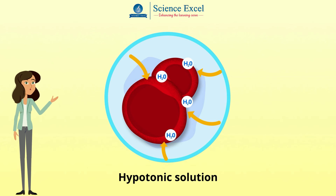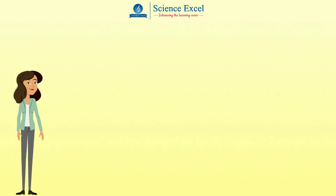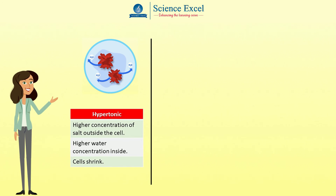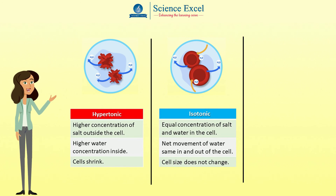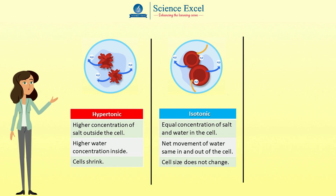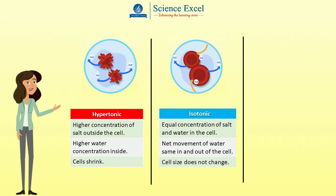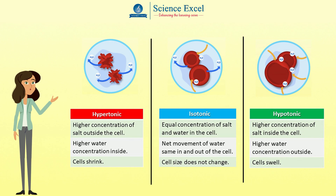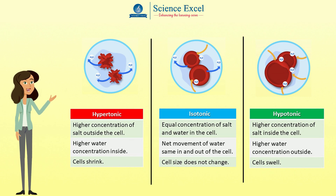Let us recap what we have learnt. A hypertonic solution has a higher concentration of salt outside the cell and higher water concentration inside, so water moves out of the cell causing it to shrink. An isotonic solution has an equal quantity of salt and water inside and outside the cell, so the net movement of water is the same in and out, and the size of the cell does not change. A hypotonic solution has a higher concentration of salt inside the cell and higher water concentration outside, so water moves inside the cell causing it to swell.